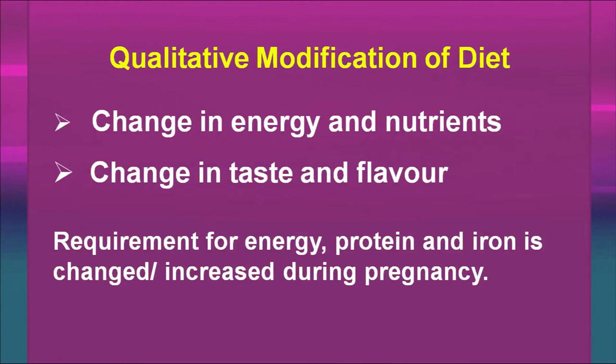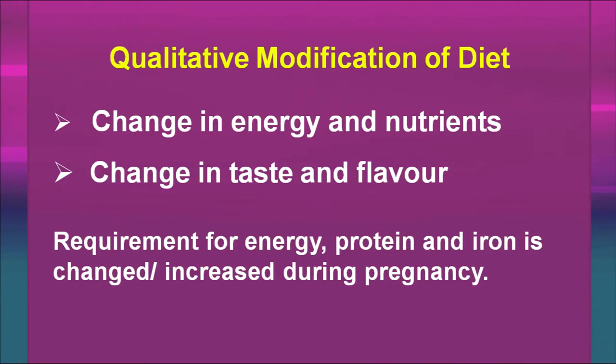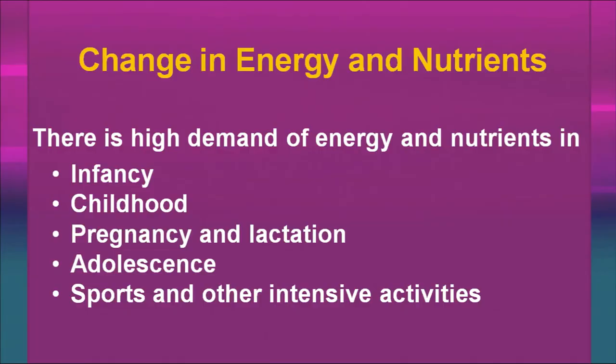When we talk about qualitative modification of the diet, quality can be changed in terms of energy and nutrients. Unlike quantity, quality is not visible — it refers to a change in energy and nutrients as well as a change in taste and flavor. For example, nutrients for energy, protein, and iron are increased during pregnancy. There is a high demand for energy and nutrients in cases of infancy — though the quantity required is less, the nutrients required are more. This also applies to childhood, pregnancy, lactation, adolescence, and sports or other intensive activities.